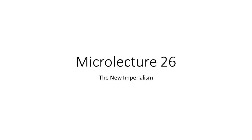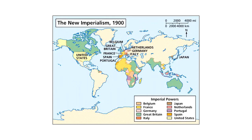Microlecture 26: The New Imperialism. Between 1880 and 1914, Western powers expanded their reach into Asia and Africa. During those years, the colonial powers sent significant sums of money and manufactured goods to these old continents, while at the same time they created vast overseas political empires.